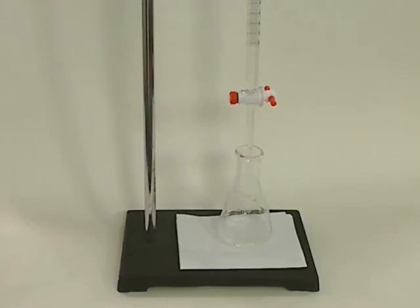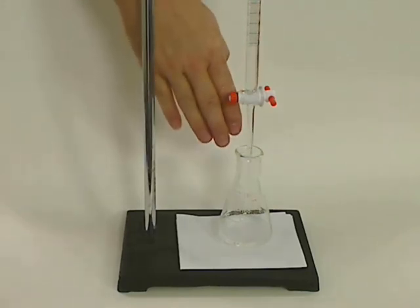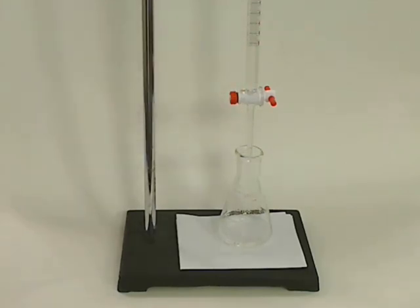Also remember, when you're doing a titration, you don't have to start at zero. You can start at any number and then you're going to have a starting volume and a finishing volume. The difference is going to be the amount that goes into your Erlenmeyer flask and reacts during the titration.